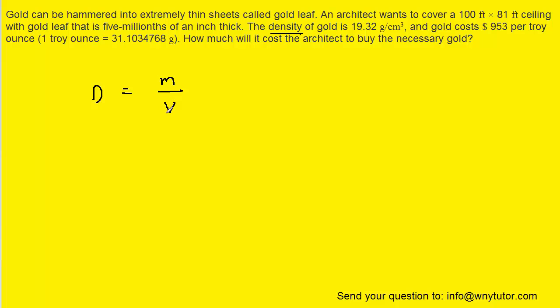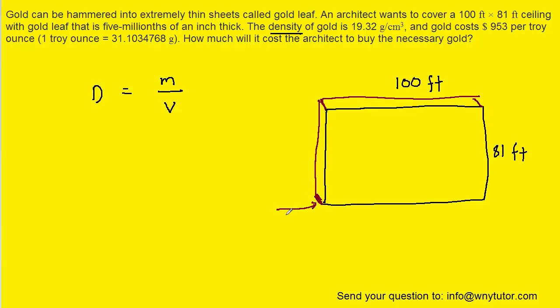What we can talk about first is the volume of this object. An architect has a ceiling that is rectangularly shaped, and we know that its measurements are 100 feet by 81 feet. In addition, we know that the paint is going to be 5 millionths of an inch thick, and so we can show the thickness of the paint by drawing it basically like a box.